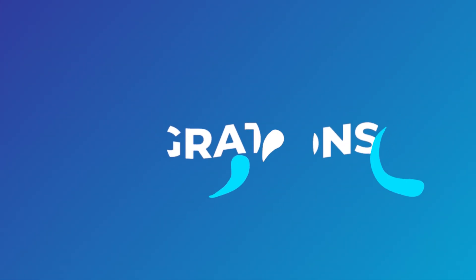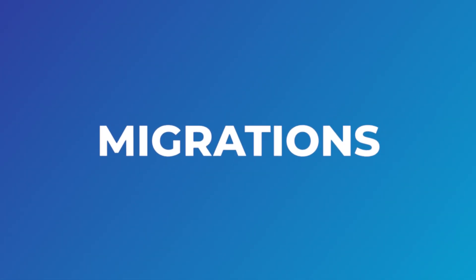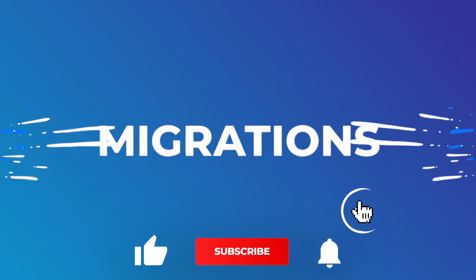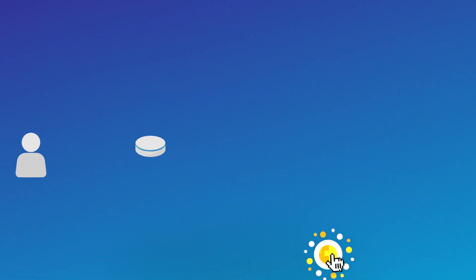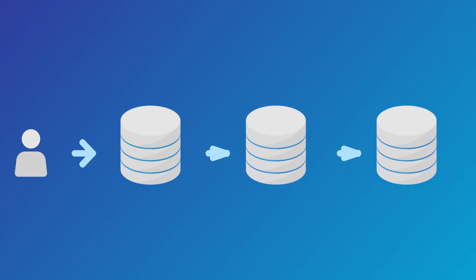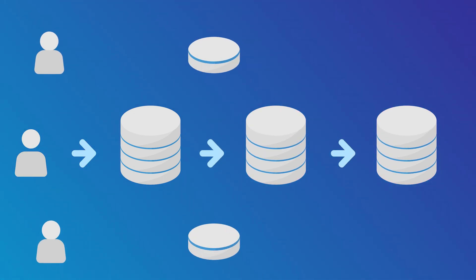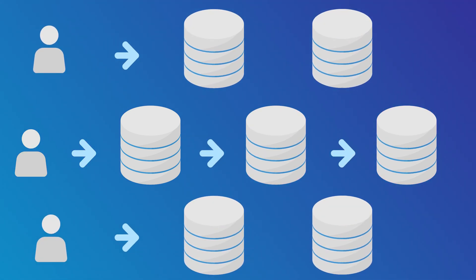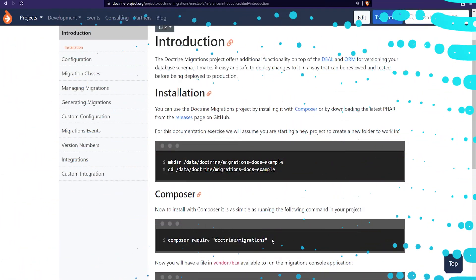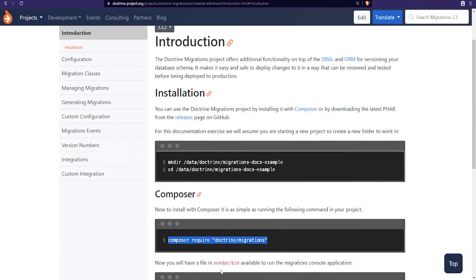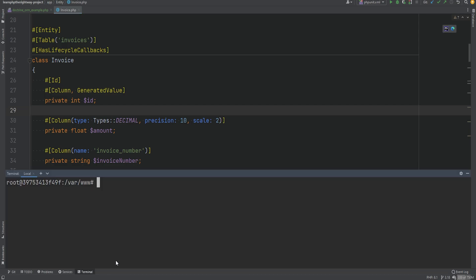Doctrine has another library called Migrations which offers additional features and functionality on top of DBAL and ORM for database schema versioning. Migrations are like a versioning system for your database. Just like when using Git you can have multiple team members pull in the code and work on it, with migrations they can also get the database set up properly and always be in sync. We can install the migrations library using Composer by running composer require doctrine/migrations.